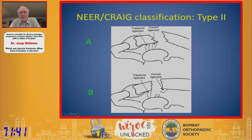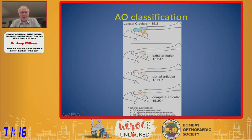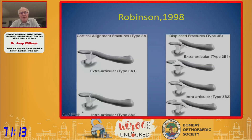Craig especially noted that type 2A and type 2B are quite frequent. The AO classification is a little simpler but not very easy to use, basically because the description being medial to the ligaments, extra-articular, partial, and completely articular is not very convenient. The same applies to the Robinson classification, which divides between cortical alignment or displaced fracture, and it is also not frequently used.